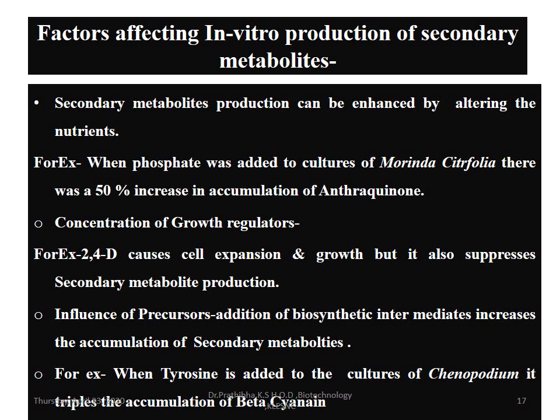Factors affecting in vitro production of secondary metabolites: secondary metabolite production can be enhanced by altering the nutrients. For example, when phosphate was added to cultures of Morinda citrifolia, there was a 50% increase in accumulation of anthraquinone. The concentration of growth regulators also matters — for example, 2,4-D causes cell expansion and growth but also suppresses secondary metabolite production. Influence of precursors: addition of biosynthetic intermediates increases the accumulation of secondary metabolites.